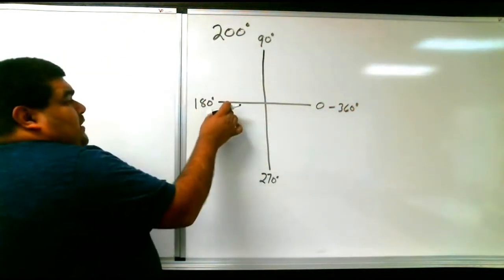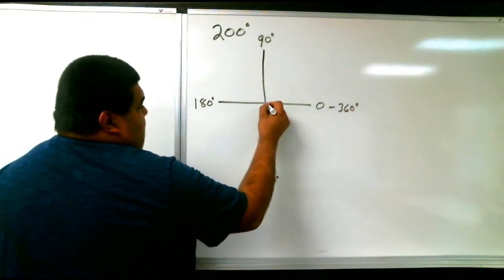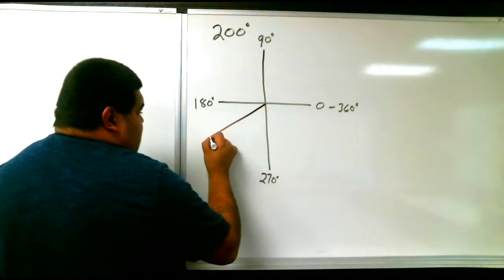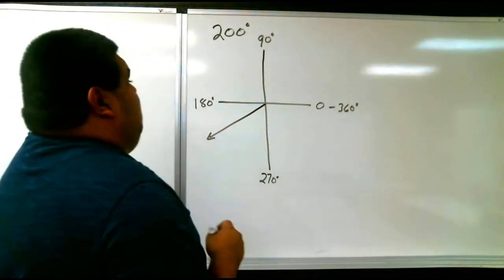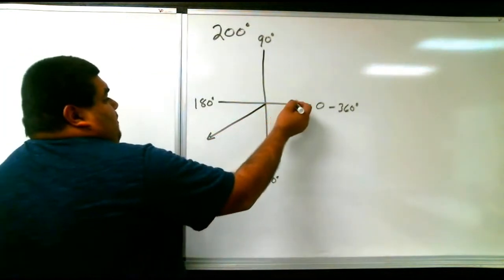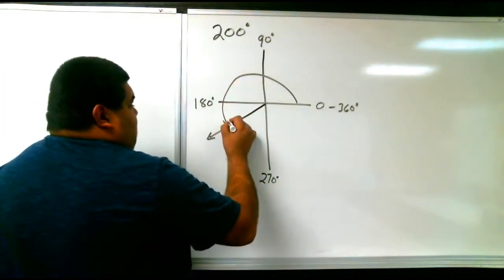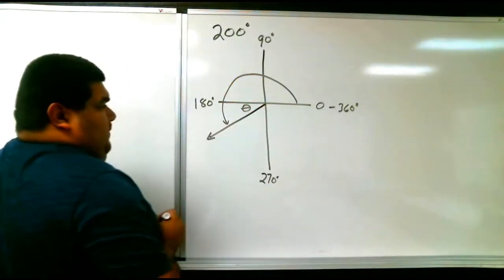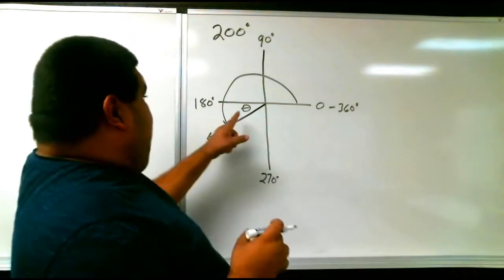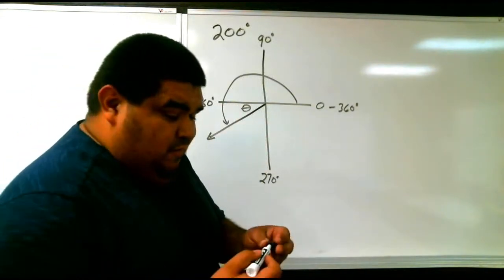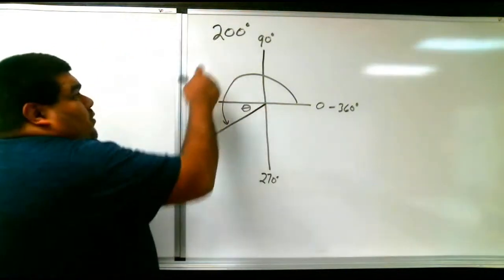200 is more than 180, less than 270. So it's approximately from the origin, it's approximately there, give or take. Remember, we're looking for the whole angle. It goes here and then we have theta. That's what we did last class. We looked for this little angle here, which was theta. Today we're looking for a coterminal angle to 200.